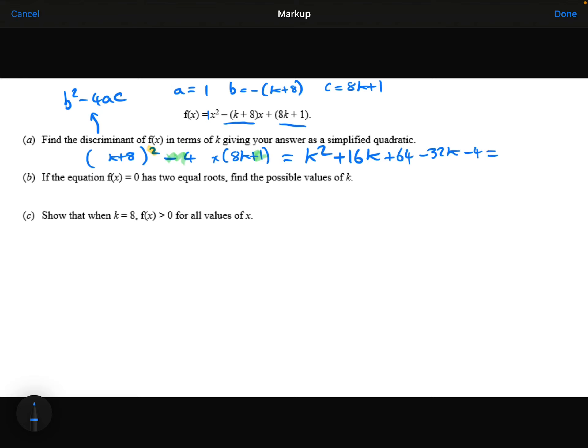Collecting up the like terms, we've got k squared. The 16k minus 32k is minus 16k. And 64 minus 4 is plus 60.